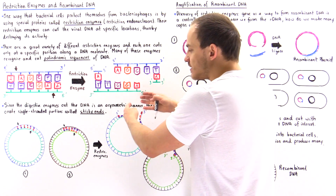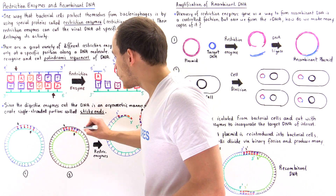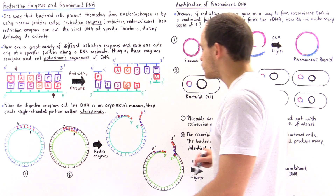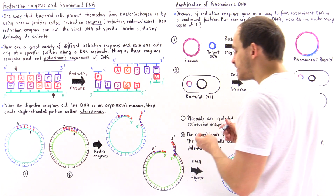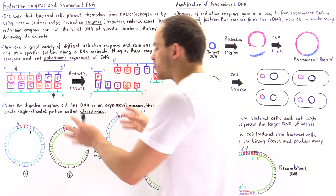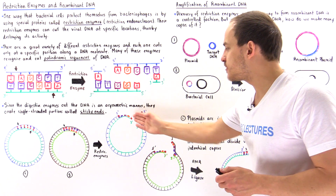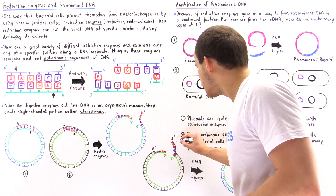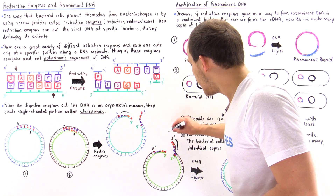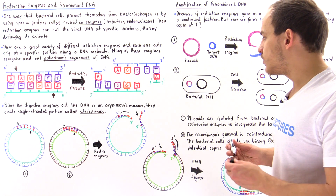This is how the cut basically takes place on both molecules. Notice that because we used the same restriction enzyme to cut these two DNA molecules, these sticky ends will be complementary with respect to one another. So this sticky end from molecule one will be complementary to this sticky end from molecule two, and likewise this sticky end will be complementary to that sticky end on the other fragment.